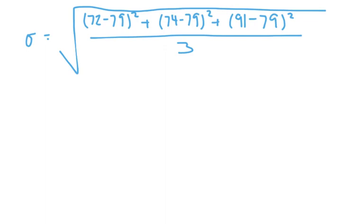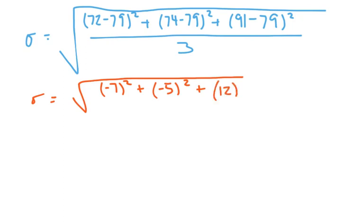Okay, here's where we left off and now let's start cleaning it up a little bit. So, sigma is going to be the square root of... 72 minus 79. That'll be negative 7 squared plus 74 minus 79 will be negative 5 squared. And then 91 minus 79 will be 12 squared, all over 3.